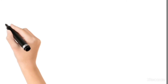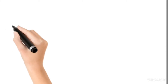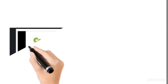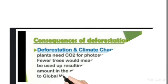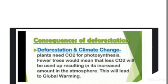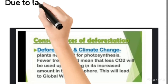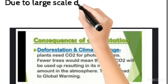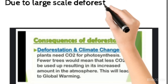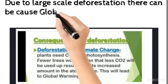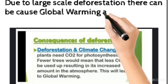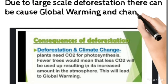Large scale deforestation can cause global warming and change in climate. Plants need carbon dioxide for photosynthesis, so fewer trees means less CO2 will be used by trees, resulting in an increased amount of CO2 in the atmosphere. This will lead to global warming.